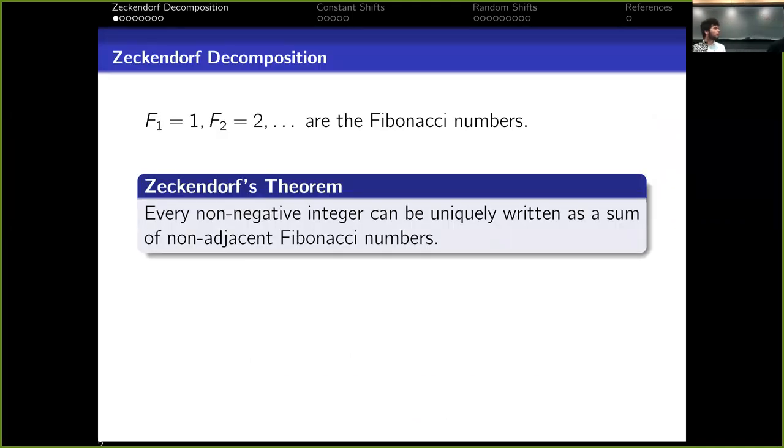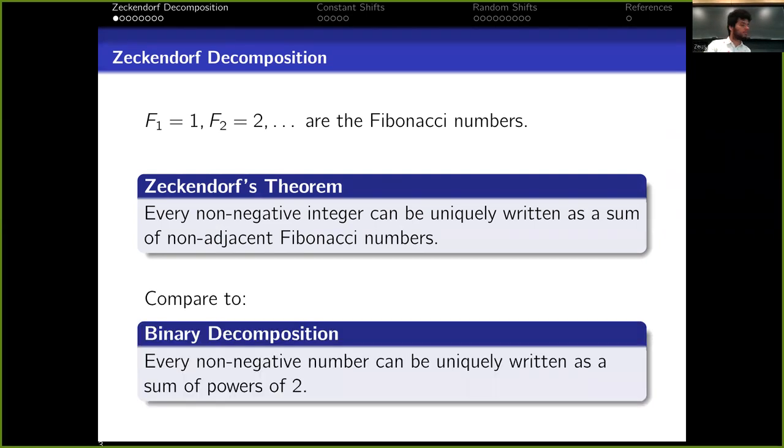So first of all, for us, Fibonacci numbers will be F₁ = 1, F₂ = 2, and so on. And by doing that, we have Zeckendorf's theorem that says that every non-negative integer can be uniquely written as a sum of non-adjacent Fibonacci numbers. And today I want to compare that to a very similar theorem that says that every non-negative integer can be uniquely written as a sum of powers of 2. So there's an extra restriction on the first theorem, but they're very similar.